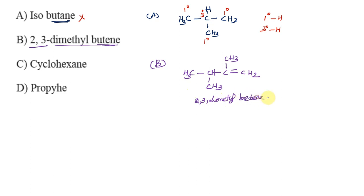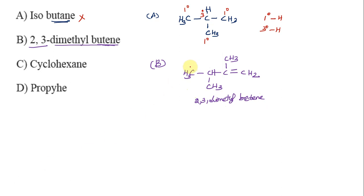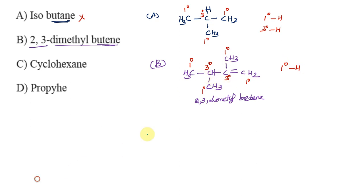Now looking at the carbons in 2,3-dimethylbutane: the end carbons are primary carbons and the middle carbons are tertiary carbons. This is primary hydrogen on the primary carbons. There is also tertiary hydrogen on the tertiary carbon.